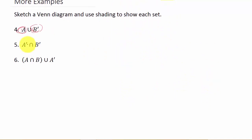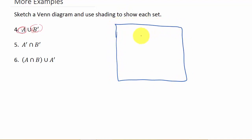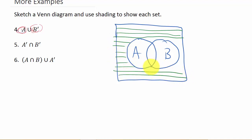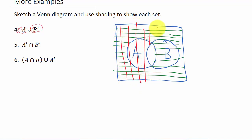Next we have A complement intersect B complement. Let's draw our box with set A and set B. We'll shade in the complement of A with horizontal lines — that's everything outside of A. Now we need to shade in the complement of B with vertical lines — that's everything outside of B.